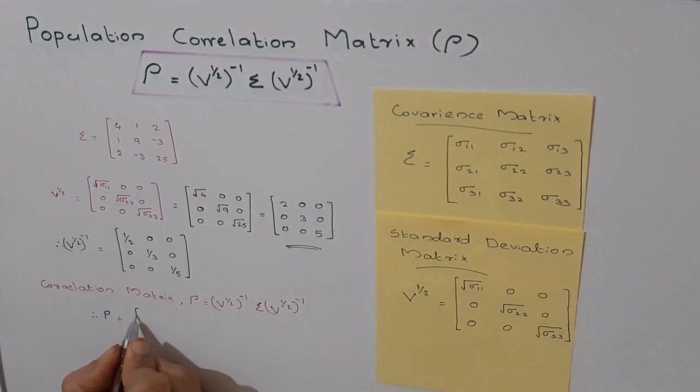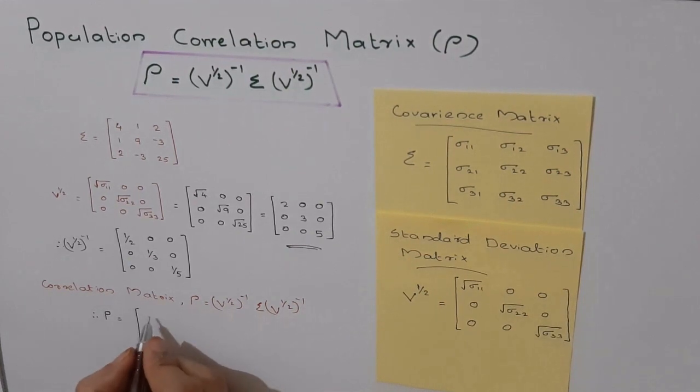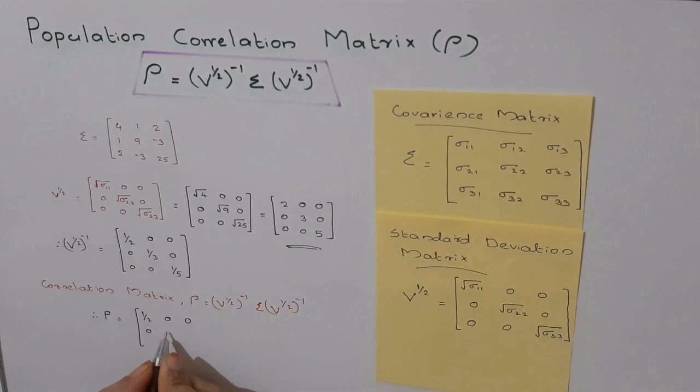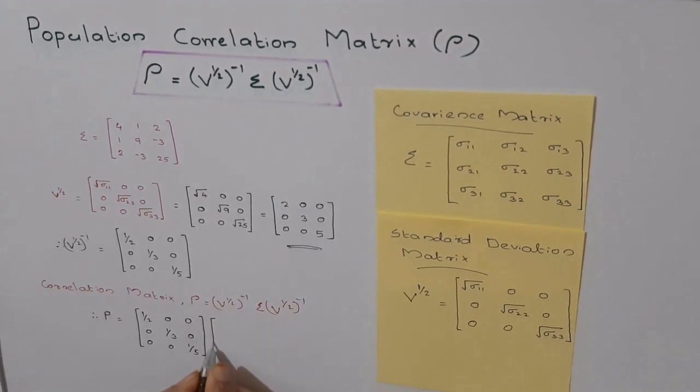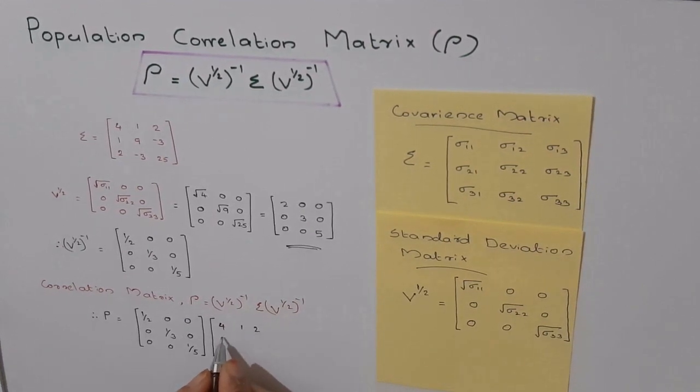ρ equals [1/2, 0, 0; 0, 1/3, 0; 0, 0, 1/5] into matrix [4,1,2; 1,9,-3; 2,-3,25] into matrix [1/2, 0, 0; 0, 1/3, 0; 0, 0, 1/5].